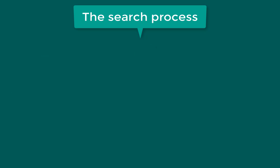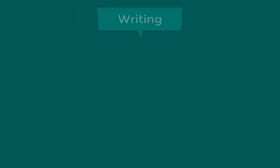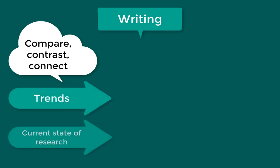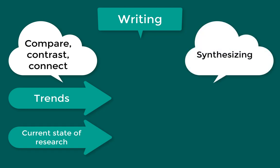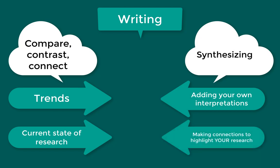The process of writing a literature review involves going back and forth between searching, reading, taking notes, and then going back to searching again once you have learned more from reading the research. When writing the literature review, work your way through the outline to compare, contrast, and connect the different pieces of research. Aim to capture the trends in the literature and inform the reader about the current state of research in this area. The writing process should include synthesizing the research and adding your own interpretations, rather than just providing a summary of each source. This means making connections between the sources to highlight the importance of your research area.